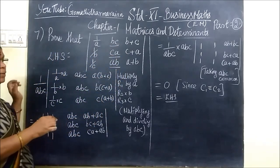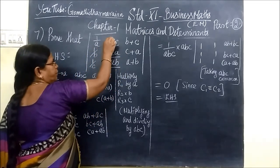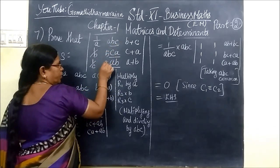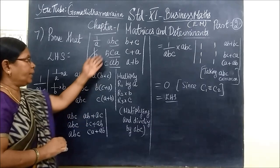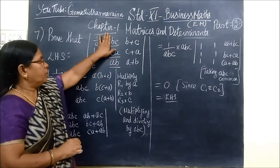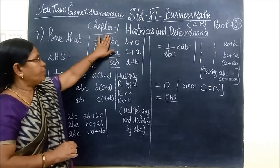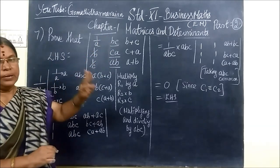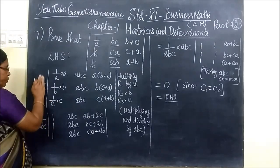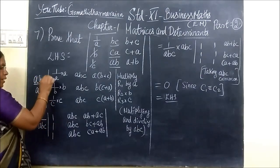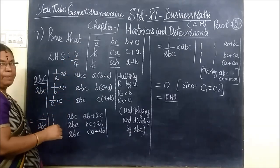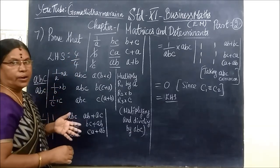Here we have A, B, C. A, B, C. Here A, B, C is common. So you multiply and divide by A, B, C. Any term can be multiplied and divided by the same number. So the value is unchanged.